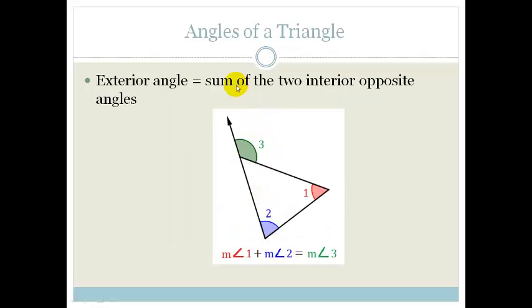Another thing that you need to learn is that the exterior angle is the sum of the two interior opposite angles. This makes sense because let's pretend that this angle here is 40 degrees, and this angle here is 60 degrees.